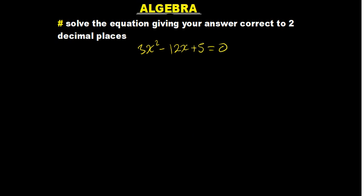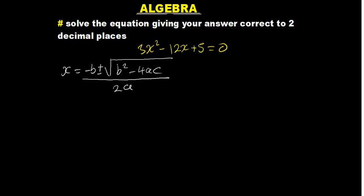We remind ourselves of the quadratic formula: x equals negative B plus or minus the square root of B squared minus 4AC, all divided by 2A. One mistake students often make is when drawing the fraction bar — they cut it too short, so it looks like only the square root of B squared minus 4AC is divided by 2A, not including the negative B. The 2A is supposed to divide everything above it.